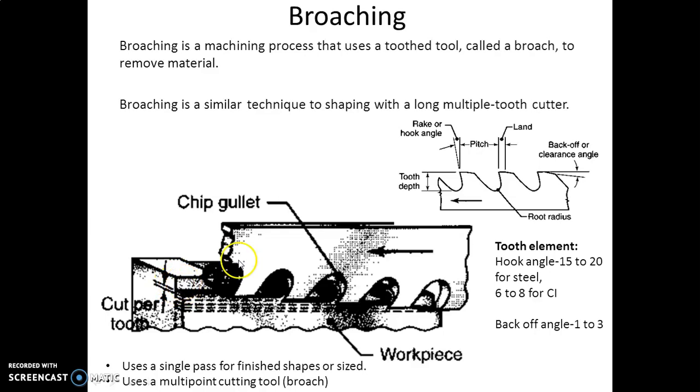This is the chip gullet and this is the thickness. This is the cut per tooth here. The rake angle or hook angle is represented in this manner. This is the land here, and this angle is called the backup or clearance angle. This is the tooth depth and this radius is considered as the root radius.